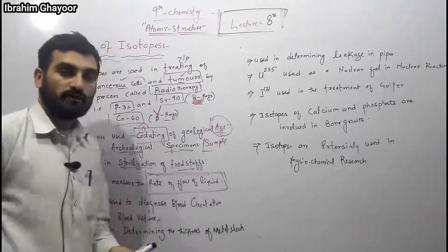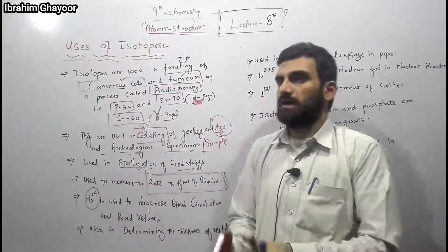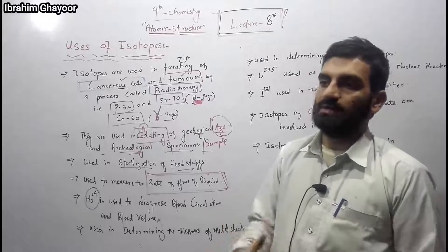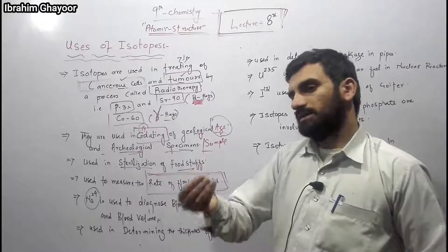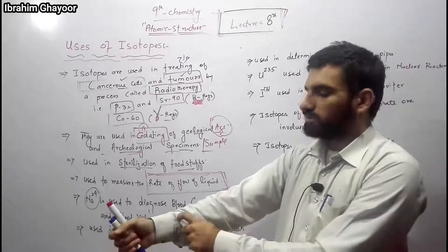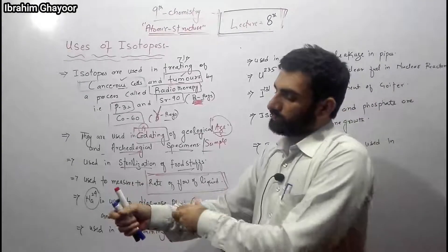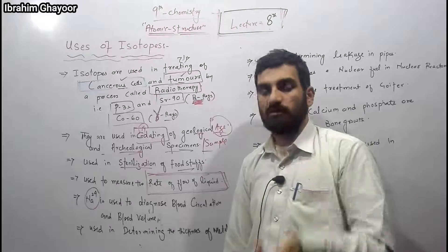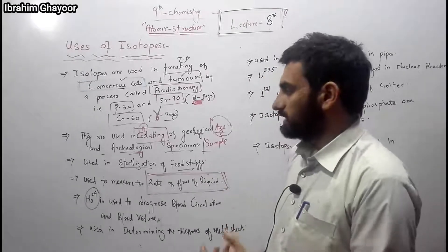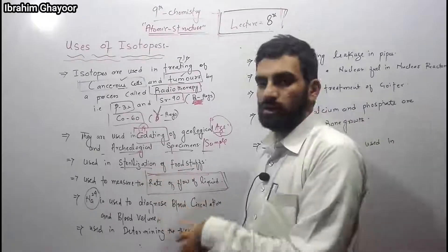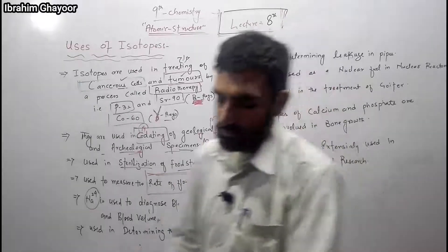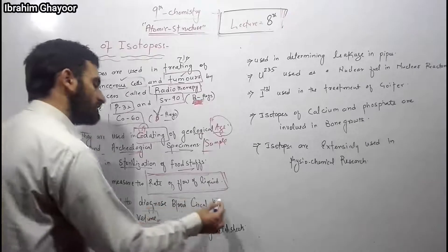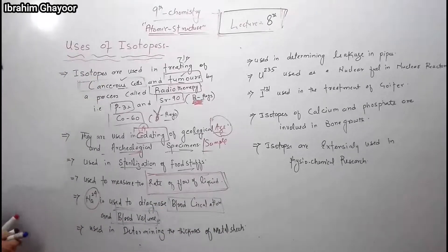Isotopes are used in determining blood circulation problems. Sodium-24 is used to identify blood circulation problems such as heart conditions, blood vessel blockages, and strokes. The sodium-24 isotope is introduced into the body, and a radiation detector tracks it. If the radiation signal is blocked, it indicates a blood vessel blockage. This also helps measure blood volume and whether blood circulation is smooth or restricted.